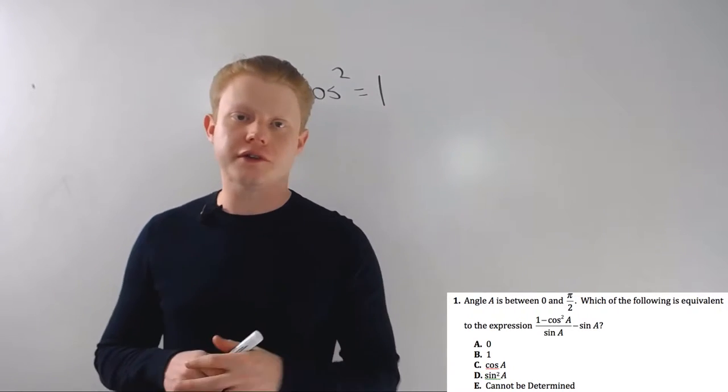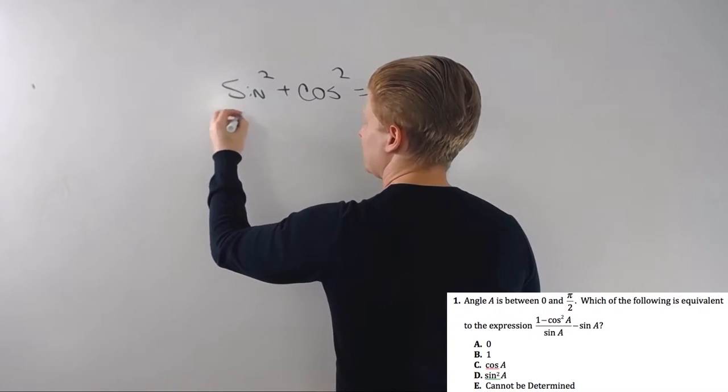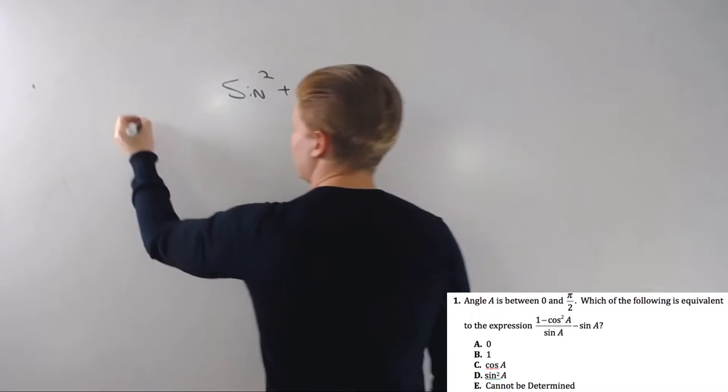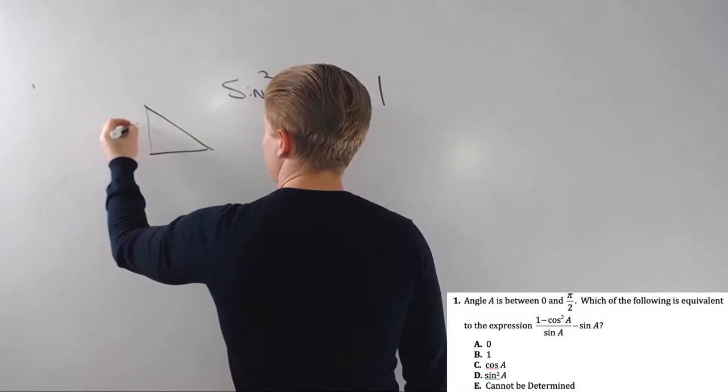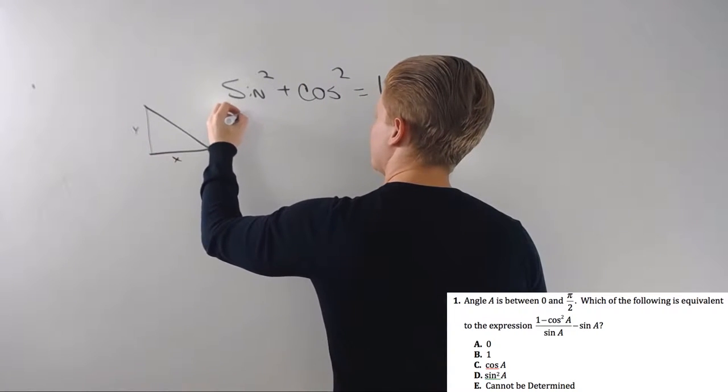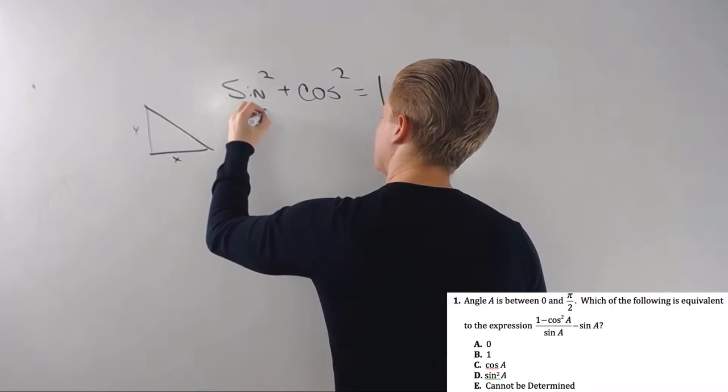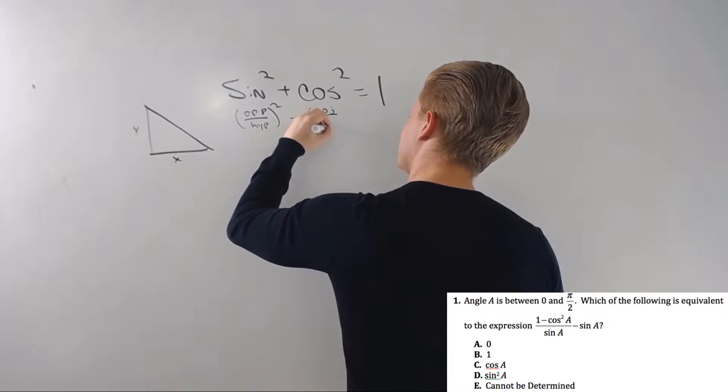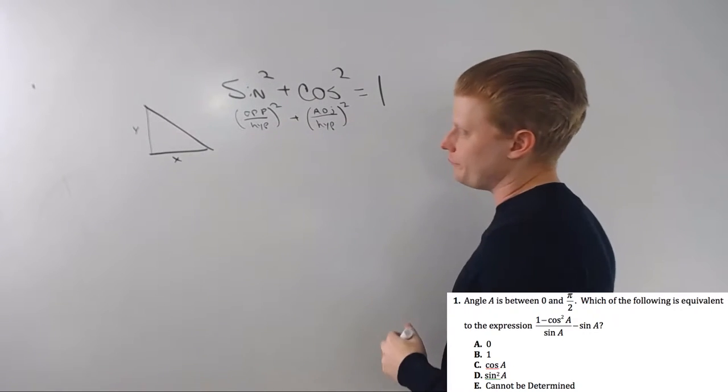So what this really is is the Pythagorean theorem. If you think about opposite and adjacent—this is kind of unit circle stuff, so you may want to look at that—if you think of opposite and adjacent as two legs of a triangle on a unit circle, they're Y and X. So you would have opposite over hypotenuse squared plus adjacent over hypotenuse squared.